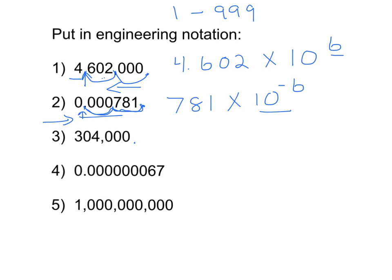For number three, I start with my decimal after the zero. I'm going to move it in groups of three: one, two, three. I will be left with three digits in front of the decimal — that's 304. If I were to move it another three, I would have no non-zero digits in front of the decimal, so that's not correct. I'm only going to move it three places. So it's 304 times 10 to the three, and it will be positive because I moved the decimal to the left.